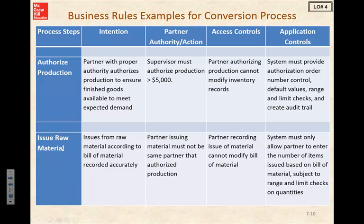Looking at issuing our raw materials — our intention is that we issue from raw material according to the bill of material, recorded accurately. The partner issuing the material must not be the same partner that authorized production. Our access control limits who can use and change records — the partner recording issue of material cannot modify the bill of material. The application control ensures data integrity: the system must only allow a partner to enter the number of items issued based on the bill of material, subject to range and limit checks on quantities.